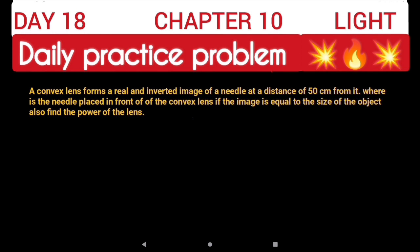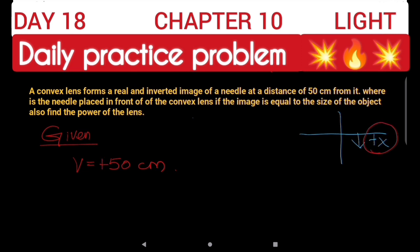So we have a convex lens forming a real and inverted image on the positive side of the x-axis. The image of a needle forms at a distance of 50 centimeters, so given, V is equal to 50 centimeters. That's why we write plus 50 centimeters. Next, where is the needle placed in front of the convex lens if the image is equal to the size of the object? We need to find the object distance when image size equals object size.